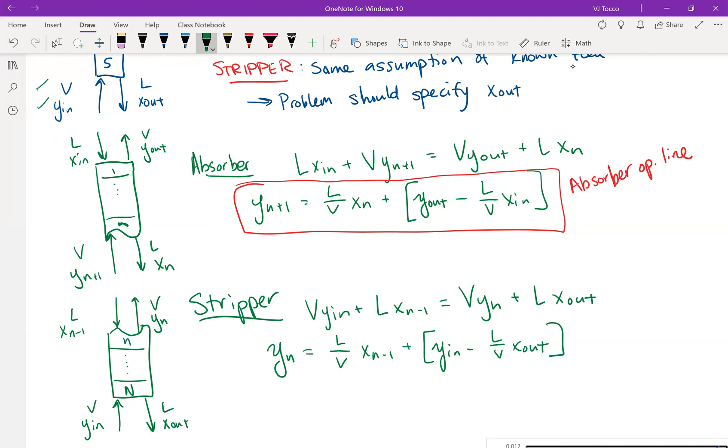And this is what I was talking about. Don't get confused by the notation here. I can do the same thing where if I just say this is x_n, I can say y of n plus one like that. This is the same equivalent expression. So this one that I just drew there is the stripper operating line. And just like the operating line from distillation, this is a linear equation. So we have a slope of L over V and an intercept in the bracket terms.